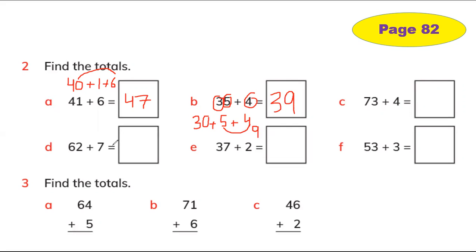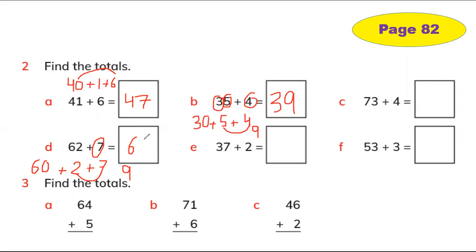Let's choose another example: 62 plus 7. How many ones in 7? Seven ones. How many ones in 62? Two ones. How many tens? Six tens — tens have a zero, so 60. Add the ones: two plus seven equals nine. Then 60 plus nine equals 69. First add ones, then add tens together.